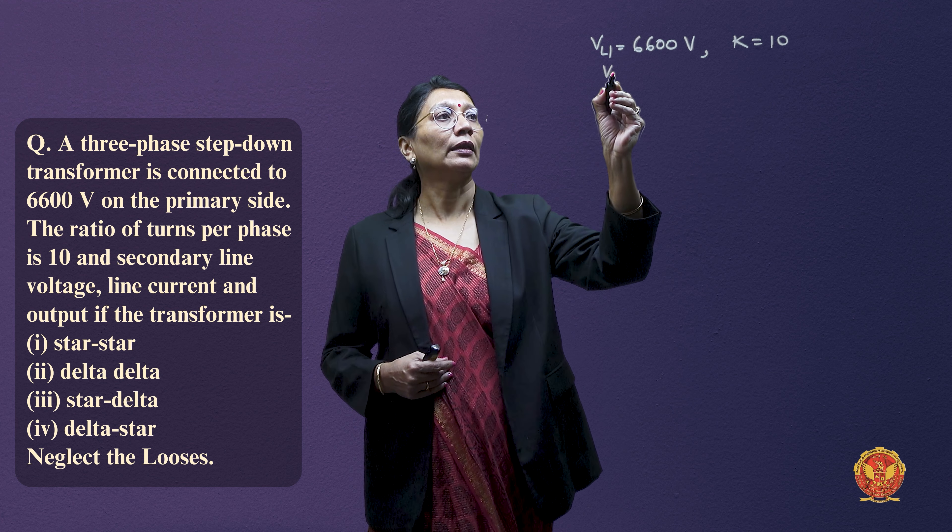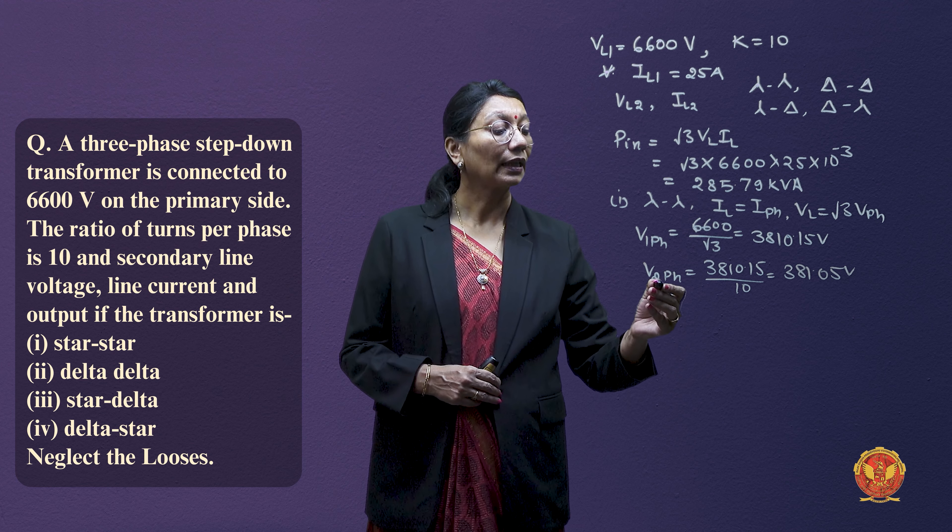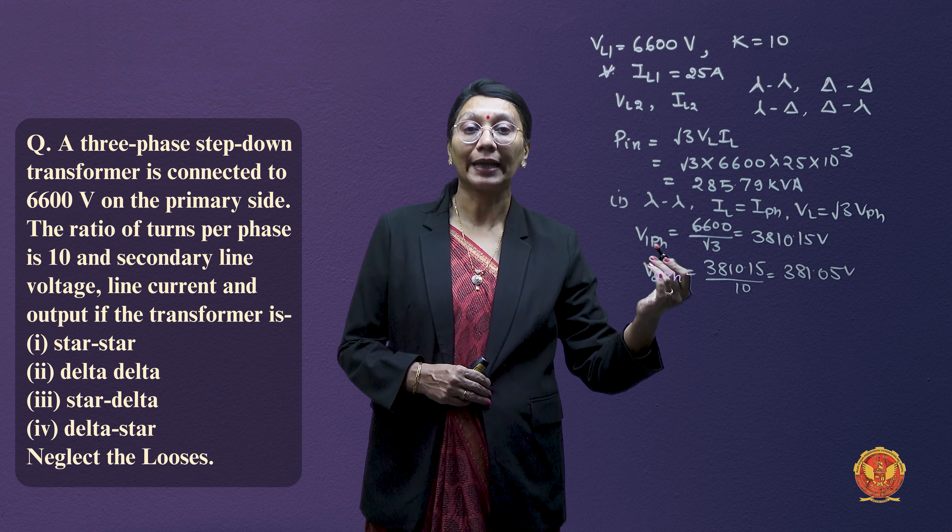Now for the secondary side voltage, we have a turns ratio of 10. So the secondary phase voltage is 3810.15 ÷ 10 = 381.05 volts. Since secondary is also star-connected, the secondary line voltage VL2 = √3 × 381.05 = 660 volts.